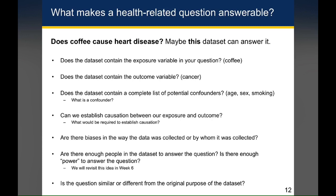Next, you'd want to potentially establish the temporal order between the exposure and the outcome. What I'm not saying is that we'll be able to establish causation in our analysis, because the types of analyses we'll be talking about in this class are not designed to establish causation. However, you want to make sure the coffee exposure happened before the development of cancer, because if that's not true, it's not even plausible to start establishing causation.